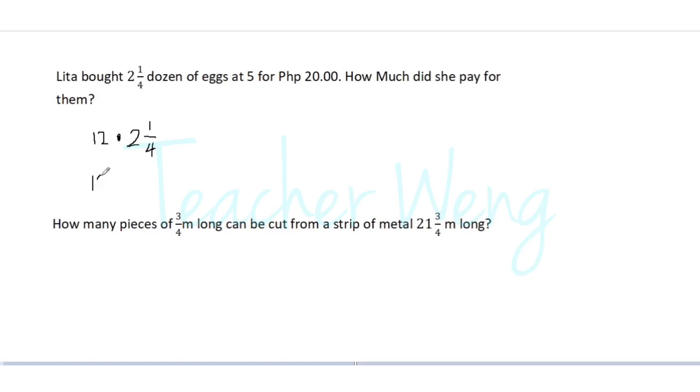So we have here twelve multiplied by—four times two, we have eight, plus one, we have nine. We have nine over four. Now, we can simplify this first before we multiply.